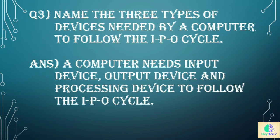Question number three: name the three types of devices needed by a computer to follow the IPO cycle. Answer: a computer needs an input device, an output device, and a processing device to follow the IPO cycle.